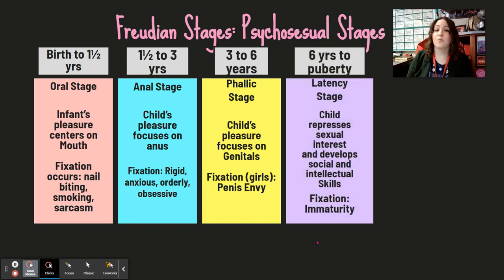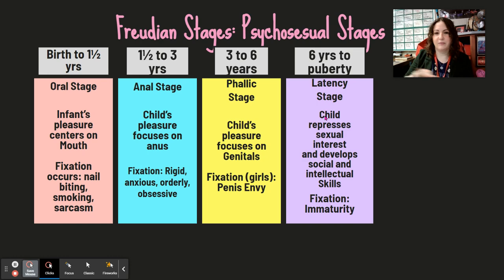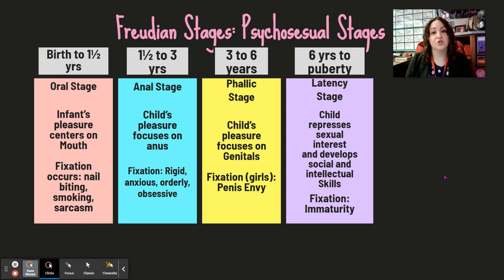Then around six to puberty is the latency stage, where all sexual urges and pleasure zones kind of go away. Boys think girls are gross and they separate — like an elementary school dance. This is where you develop social skills with people of your same gender. If you have a problem with this stage, you're going to have a sense of immaturity — you can't create social relationships with other people, lacking a level of maturity everyone else develops during this stage.